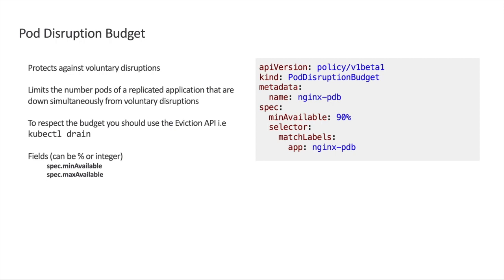Pod disruption budget is a way to protect our deployment from voluntary actions — actions performed by an admin or automation, like draining a node, removing a pod, or scaling down operations. Pod disruption budget helps you decide the number of pods that can be disrupted simultaneously. In the example on the right, we apply a policy stating that the nginx deployment with the label nginx-pdb should have at least 90% of its pods available, meaning if I have 10 pods, I can tolerate the failure of only one. Note that pod disruption budget does not protect from involuntary actions like node failure or shutdown.